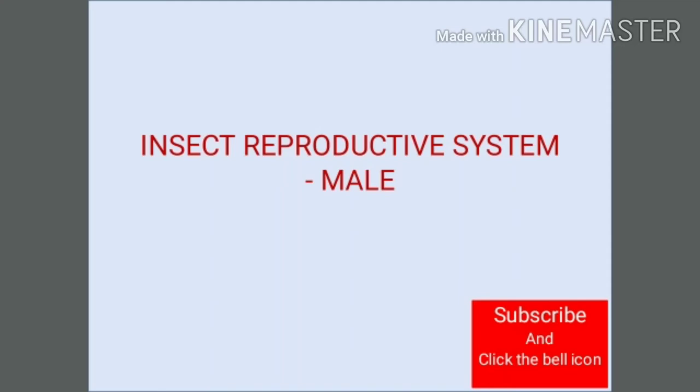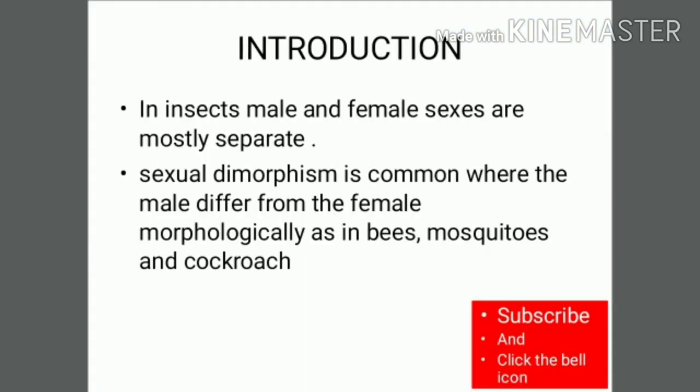In today's lecture we are going to learn about the insect reproductive system, specifically the male system. In insects, the male and female sexes are mostly separate, and sexual dimorphism is common among insects, where the male and female differ morphologically.